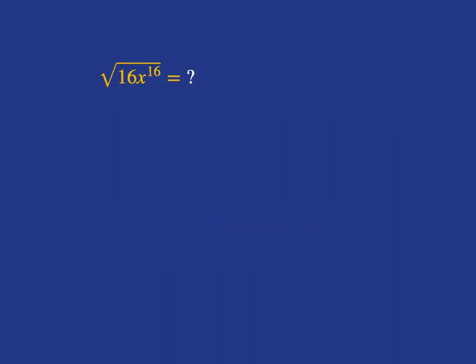Here's a nice confusing one. What's the square root of 16x to the 16? We're asking what positive number multiplied by itself will get us to 16x to the 16. Well, the square root of 16, the plain old number, is nice and simple — that's just 4.